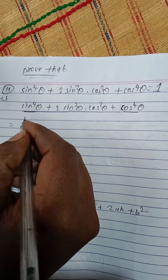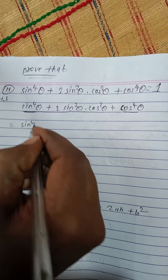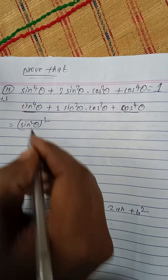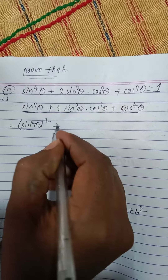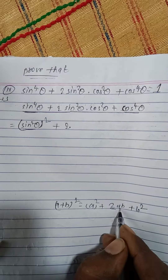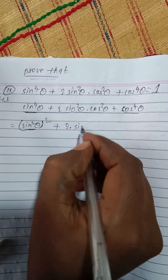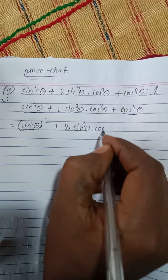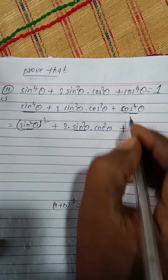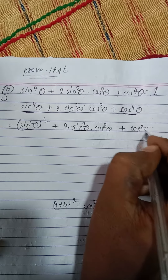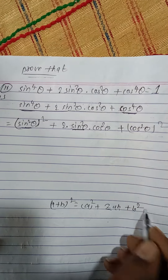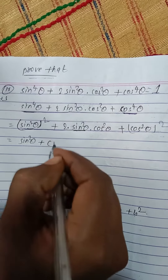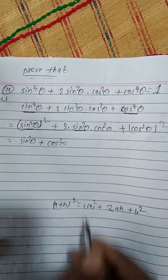Now, sin square theta acts as 'a', so a squared is sin power 4 theta. Then 2ab means 2 times sin square theta times cos square theta, where b is cos square theta. And b squared gives cos power 4 theta. So the whole expression can be written as sin square theta plus cos square theta, all squared.